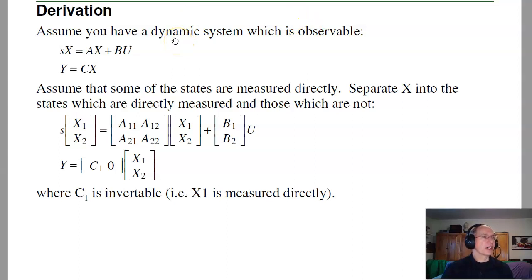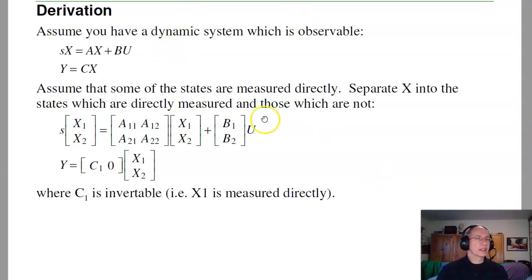Now, the derivation is as follows. Assume you've got a plant. The form x dot equals ax plus bu, y equals cx, and of course the plant has to be observable. Now let's separate the states x into two parts, x1 and x2. x1 is measured directly, c1 is invertible, so I know what x1 is just by taking c1 inverse times y. x2 are the n minus m states, the ones that I don't measure directly, the ones I have to estimate. So take the A matrix, when you rearrange it this way, split it up into four terms. The B matrix has two terms, and the C matrix. The second term is zero because I'm not measuring x2.